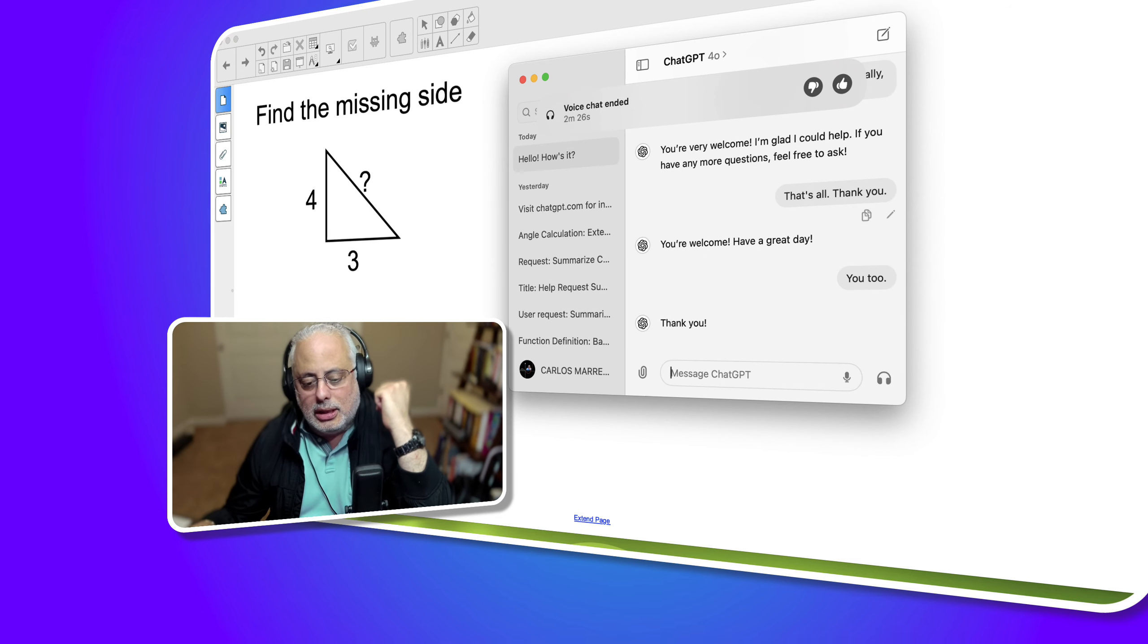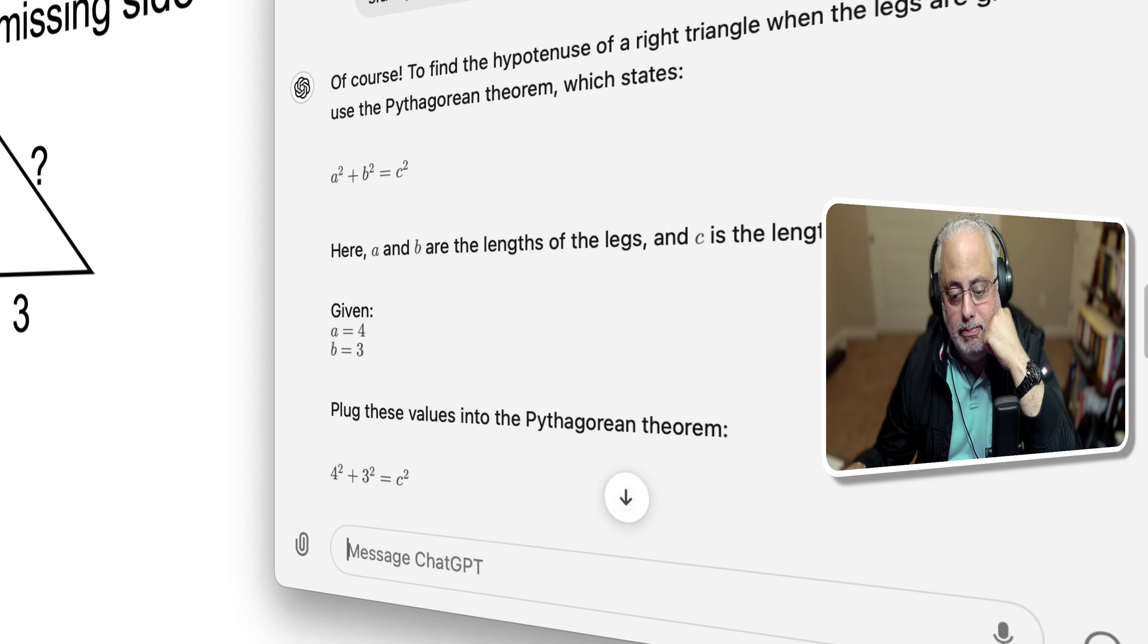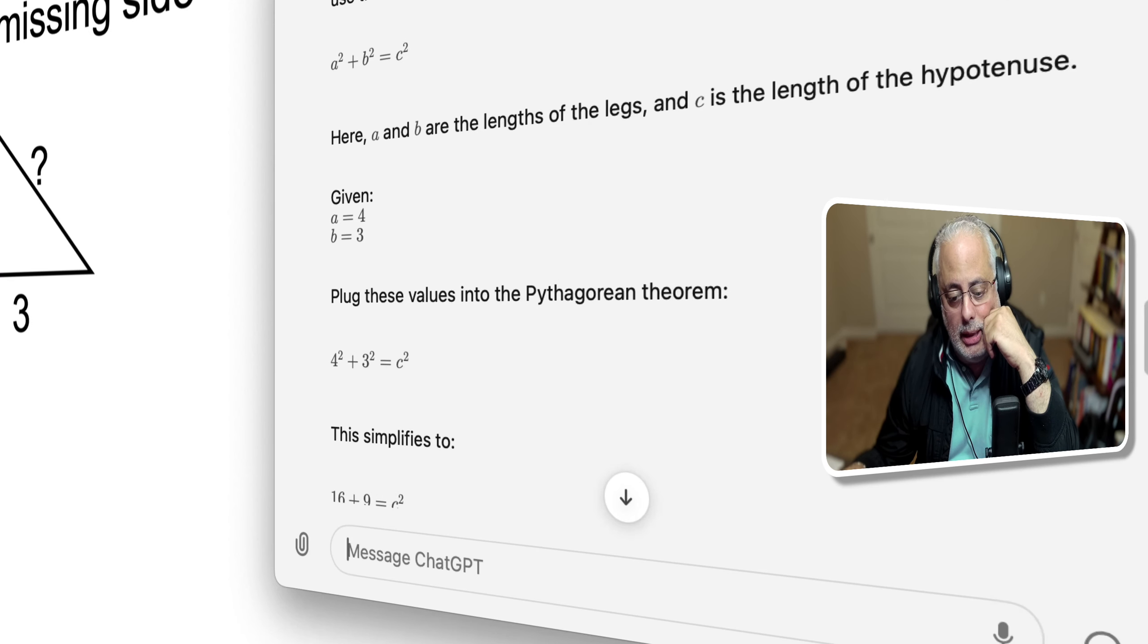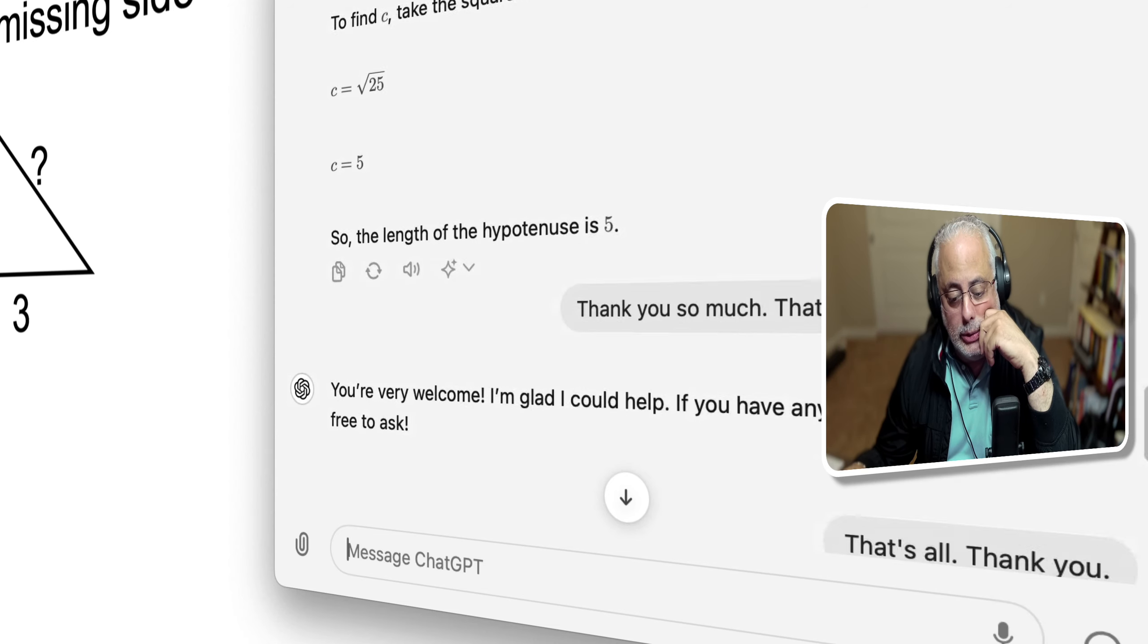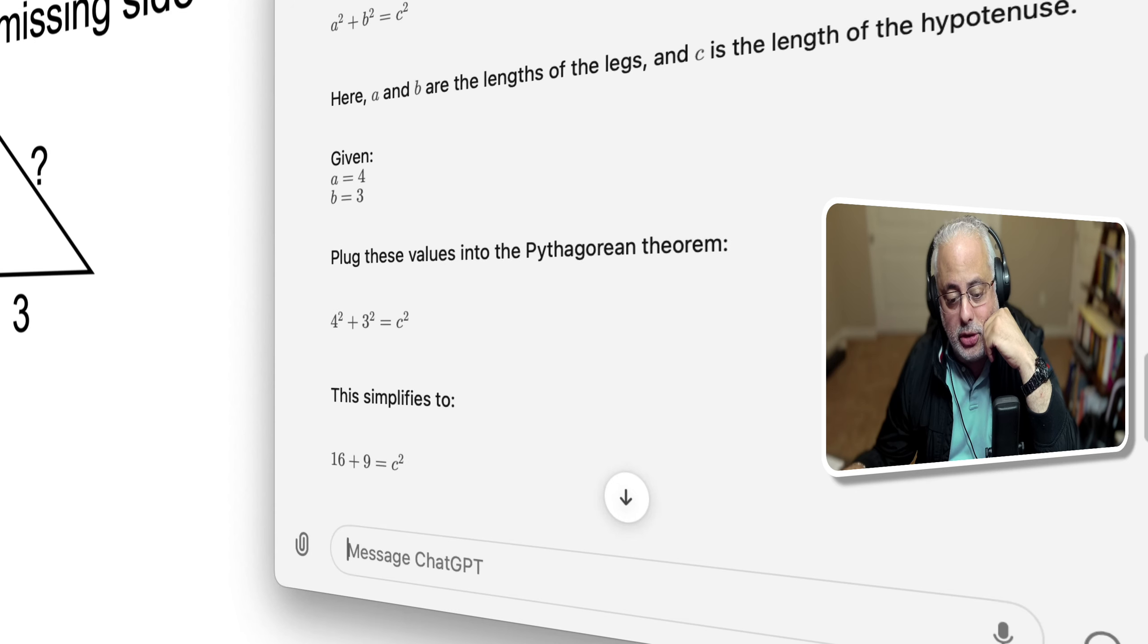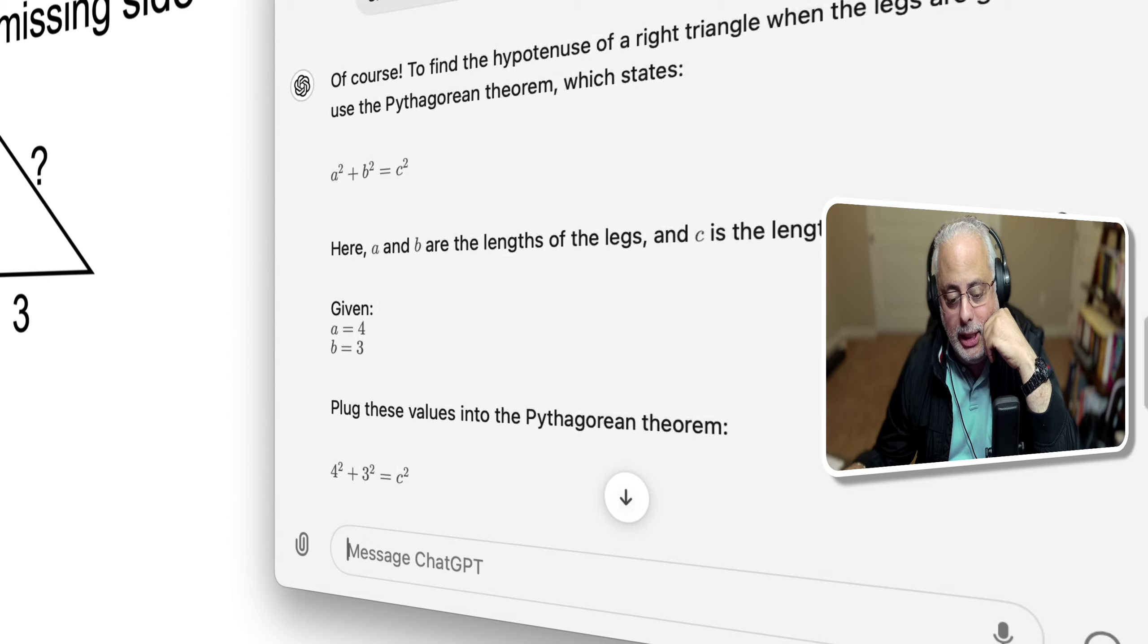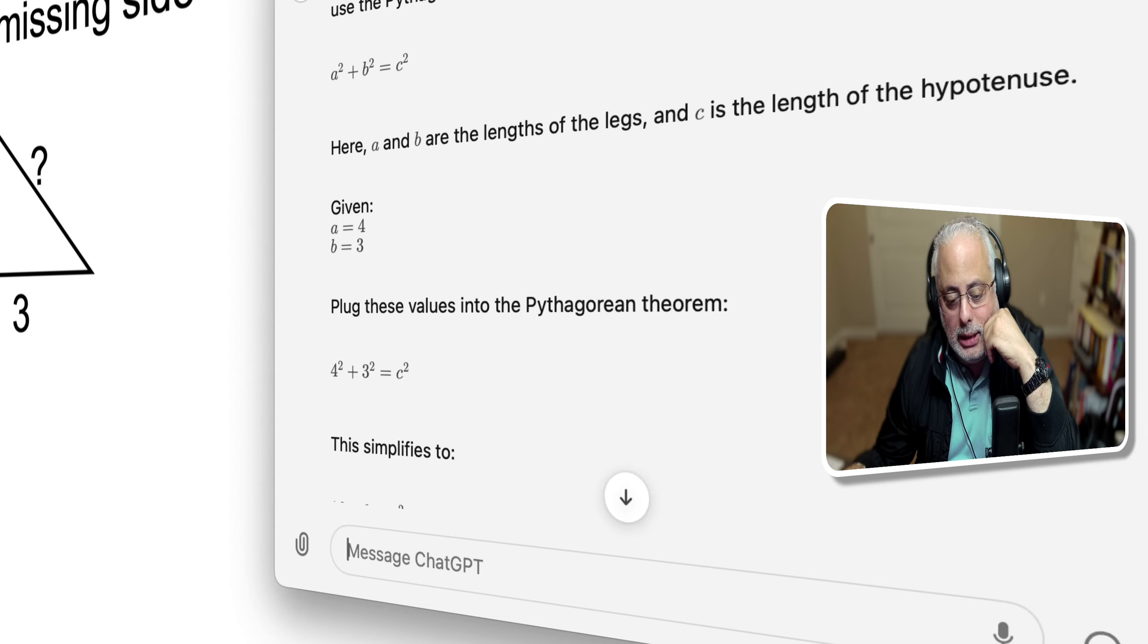This is ChatGPT, the new version that is interacting with a tutor, with a math tutor. And you have here all the transcript of the conversation from the very beginning, with the formula, a² plus b² equals c², the information given,